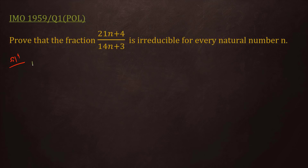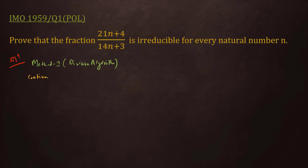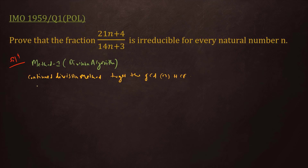The first method is the Division Algorithm. This is nothing but a continued division method to get the GCD or HCF. For this problem, if we get the GCD equal to 1, then this fraction is proved to be irreducible.